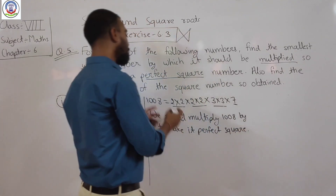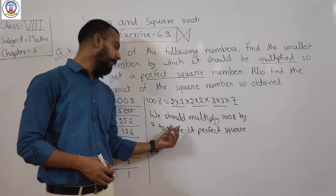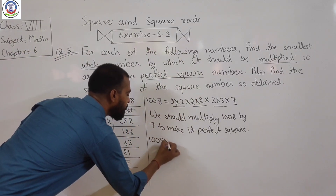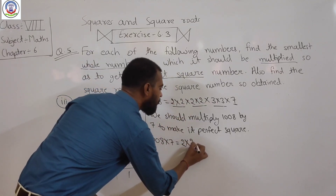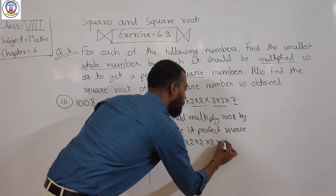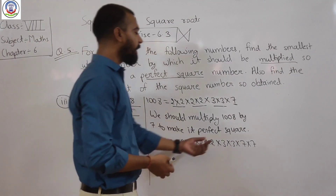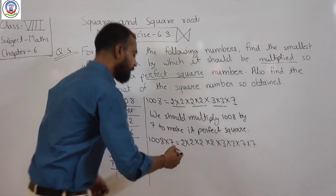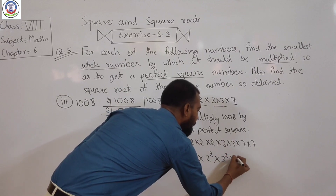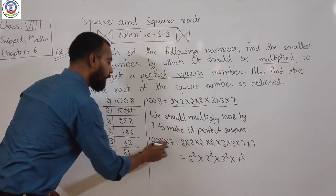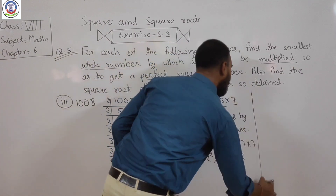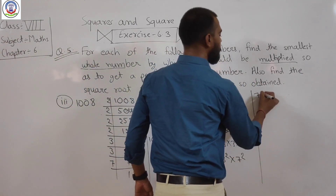To make 1008 a perfect square we multiply by 7, giving us 1008 × 7 = 7056. This equals 2² × 2² × 3² × 7², and taking the square root, we get 2 × 2 × 3 × 7 = 84. So the square root of 7056 is 84.